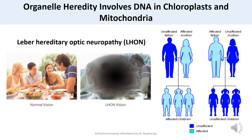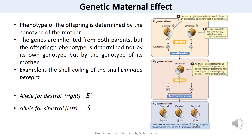Now let's discuss genetic maternal effect, a genetic phenomenon sometimes confused with cytoplasmic inheritance. It is the effect in which the phenotype of the offspring is determined by the genotype of the mother. In cytoplasmic inheritance, the genes for a characteristic are inherited from only one parent, usually the mother. In genetic maternal effect, the genes are inherited from both parents, but the offspring's phenotype is determined not by its own genotype but by the genotype of its mother. Genetic maternal effect frequently arises when substances present in the cytoplasm of an egg — encoded by the mother's nuclear genes — are pivotal in early development.